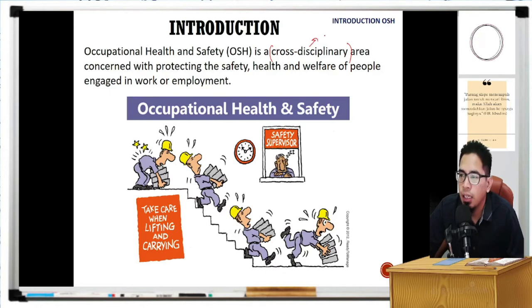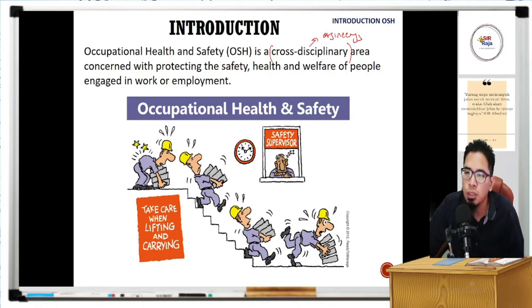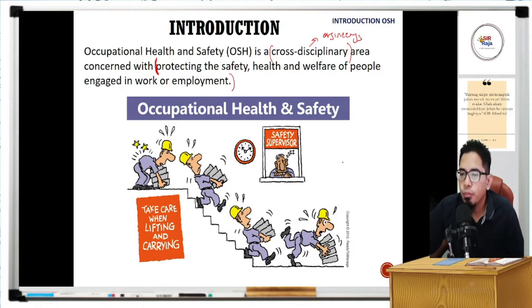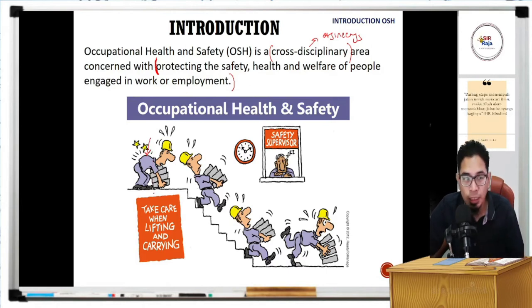OSH's main concern is protecting the safety, health, and welfare of people engaged in the work environment. As shown in the picture, an example of unsafe practice is lifting heavy objects using your back instead of your knees. It's not just about strength - it's about using the correct technique to prevent injury.